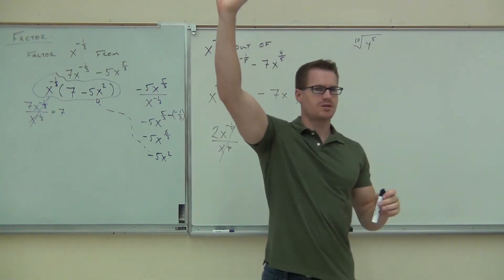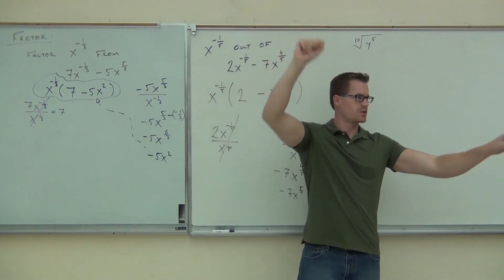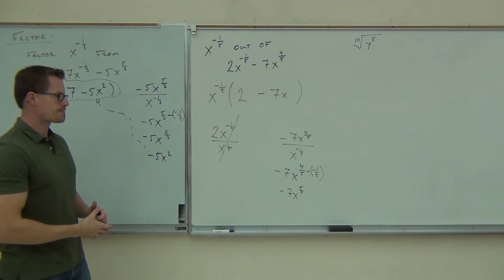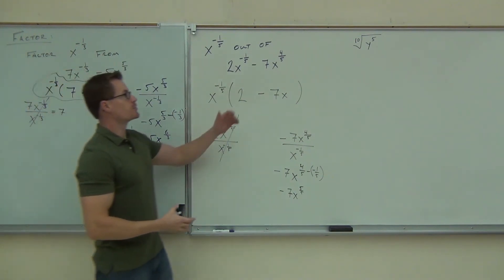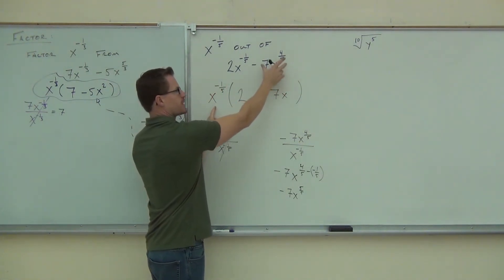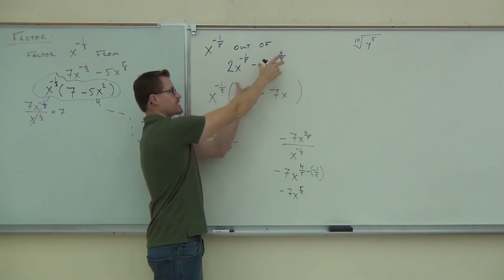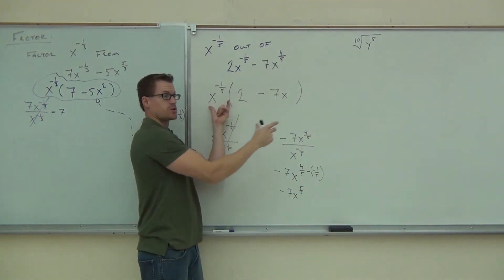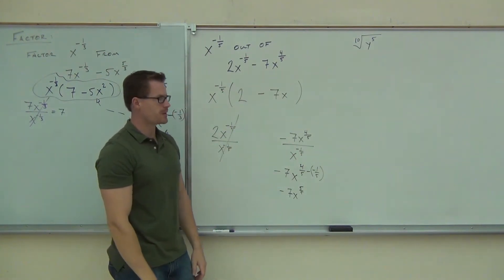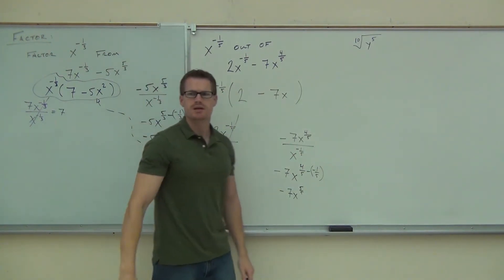How many of you understood what we've talked about so far? I got a question about the negative one, so you always have to put the one from the inside first. Otherwise, you're dividing this by this. We don't want to do that. We're dividing this by this. You're factoring out this, so this one has to go on the denominator every time. Otherwise, you will get the opposite sign on your exponents every time. Good question.